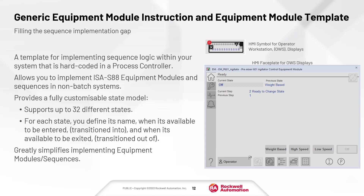The generic equipment module instruction and equipment module template is all about filling the sequence implementation gap. It is a template for implementing sequence logic within your system that is hard-coded in a process controller and is only available to use in our process controllers. It allows you to implement ISA S88 equipment modules and sequences in non-batch systems. It provides a fully customizable state model with up to 32 different states, each with their own name, configurable entry and exit conditions, and it greatly simplifies implementing your common modules and sequences.